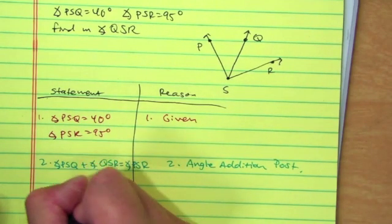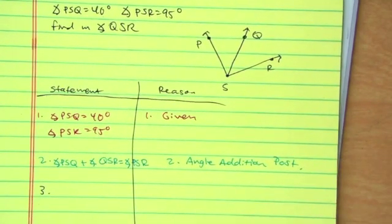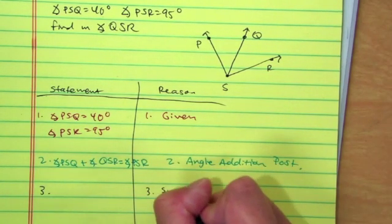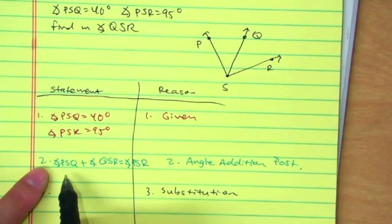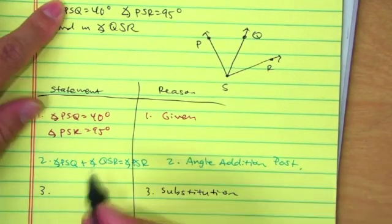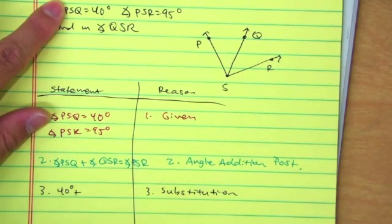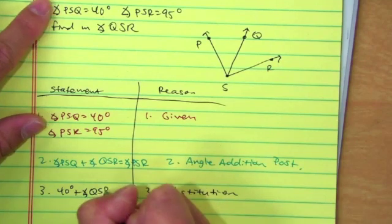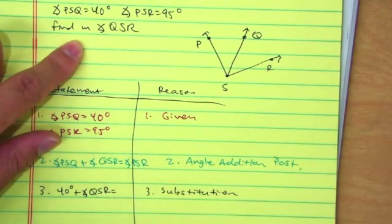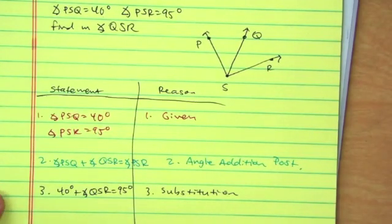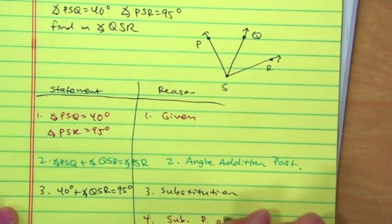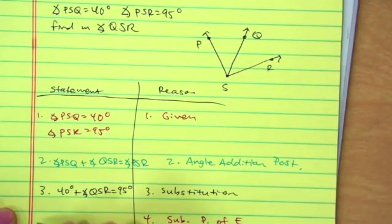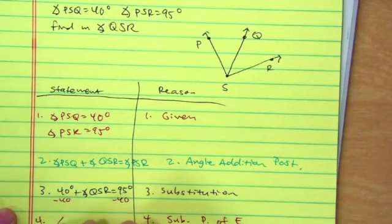Statement number three — substitution. What is PSQ? 40 degrees. So I have 40 degrees plus angle QSR — that's the unknown — equals 95 degrees. Now I subtract 40 degrees from both sides. Therefore, angle QSR equals 55 degrees.